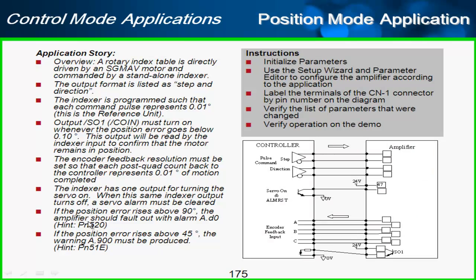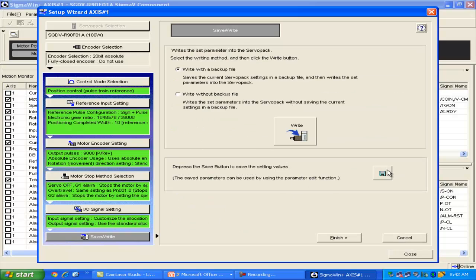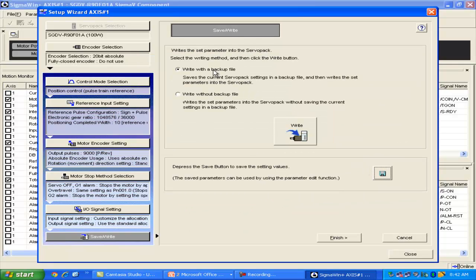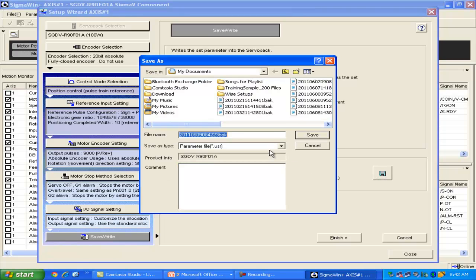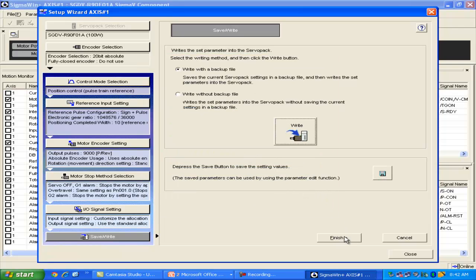Now for these other two that have to do with the position error, alarms and warnings, I can't really do those through the wizard. So I'll go into these parameters next here outside of the wizard. So I'll save the wizard. I like to save first. Call it position mode. And then you can write with a backup file. And I'll finish.